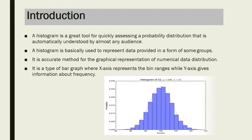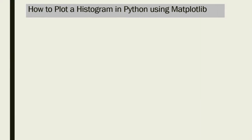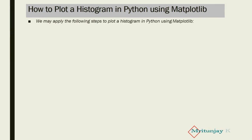You can see this diagram — this is a histogram representing the probability in graphical form. Now let's see how to create a histogram in Python using Matplotlib. There are certain steps we may apply to plot a histogram in Python using Matplotlib.